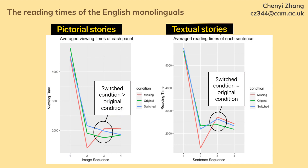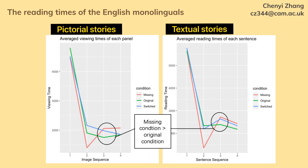This implies processing a sentence in English might be more time-consuming than processing an equivalent picture. More importantly, the reading time of the critical panel — the panel after the bridging event — also displayed different patterns in the two contexts. For stories with a pictorial context, the reading time was significantly longer in the switched condition than in the original condition. But for stories with a text context, there was no difference. This proves our hypothesis that text-picture integration can be achieved without extra cognitive efforts, while sentences in English might be harder to process than pictures. For stories with no bridging information, the reading time was significantly longer than in the original condition, indicating that bridging inference generation is indeed cognitively demanding.